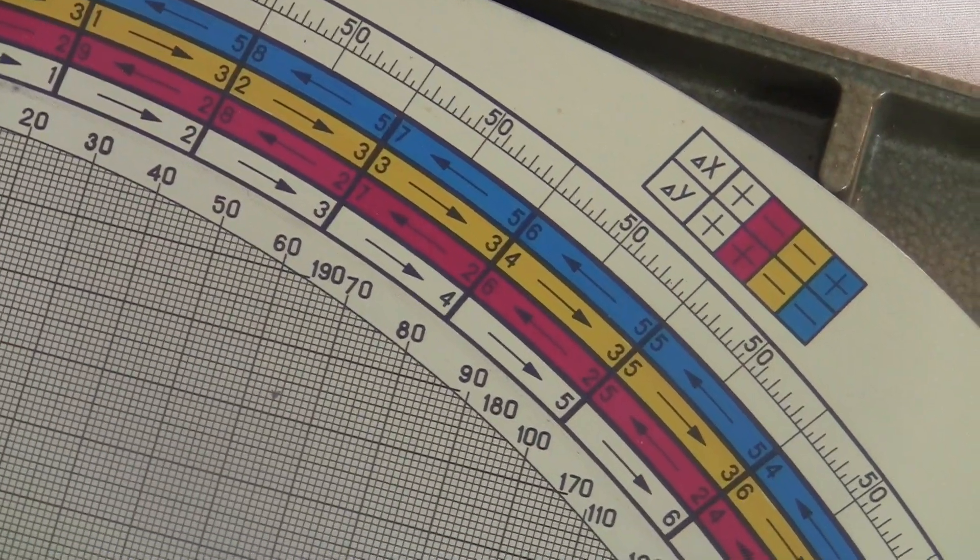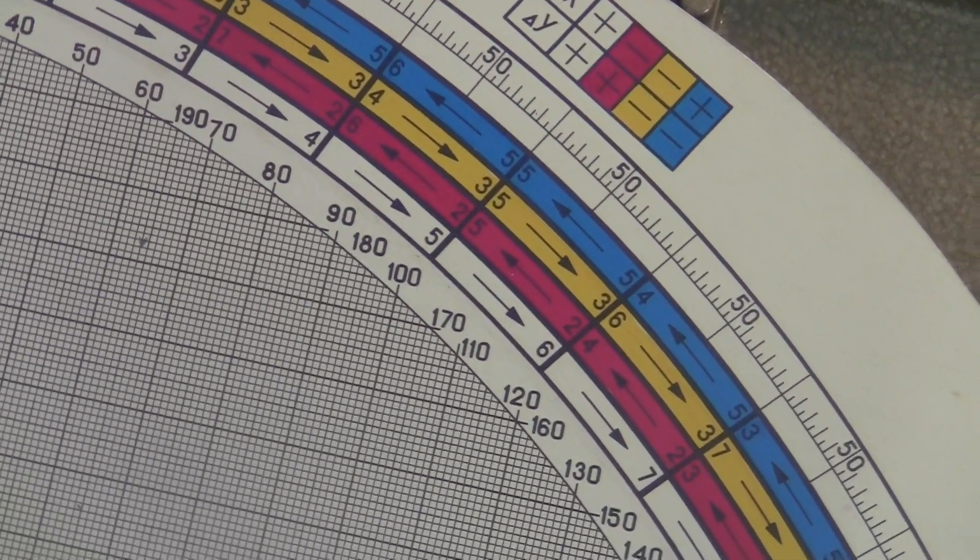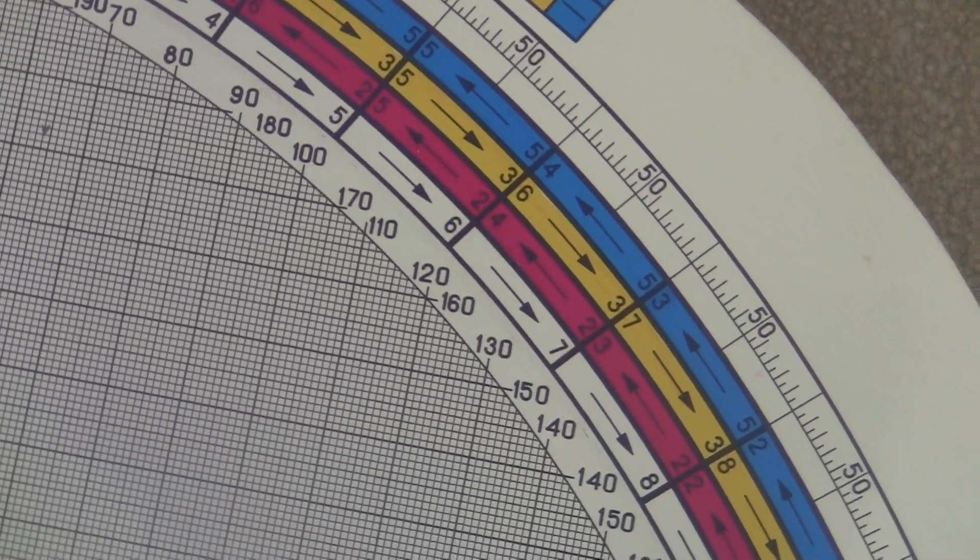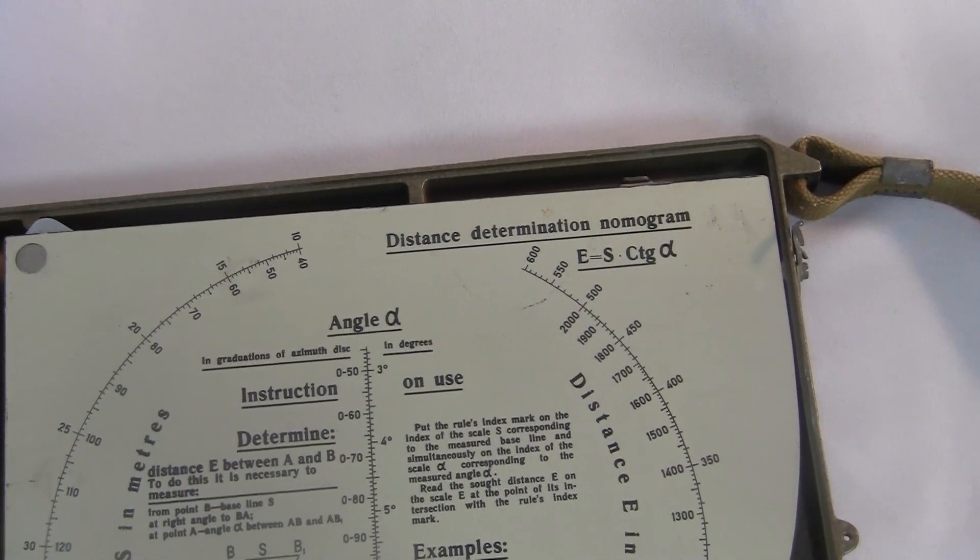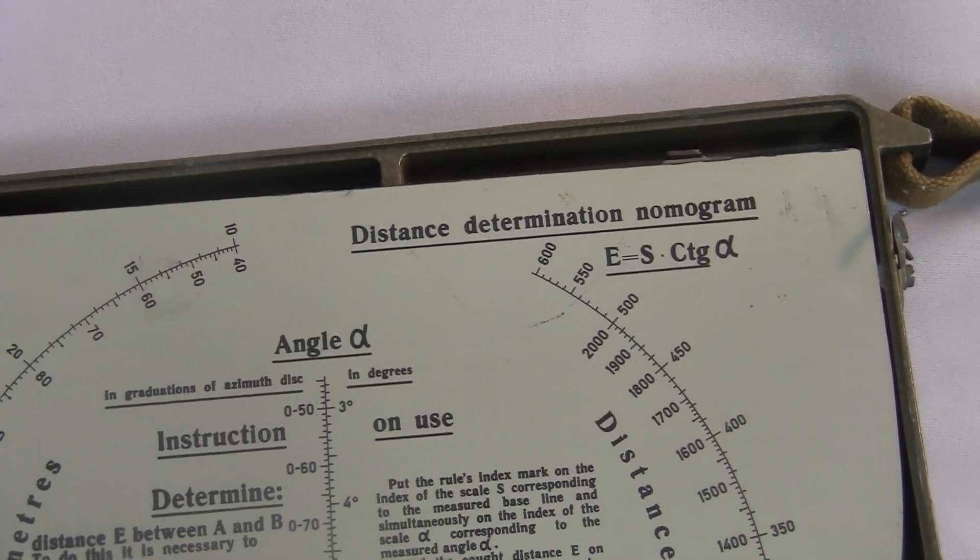Around the edge of the circle are four colored scales and another one up top with a bunch of 50s on it. You can turn this plate over and you'll see the Distance Determination Nomogram, which is another chart.